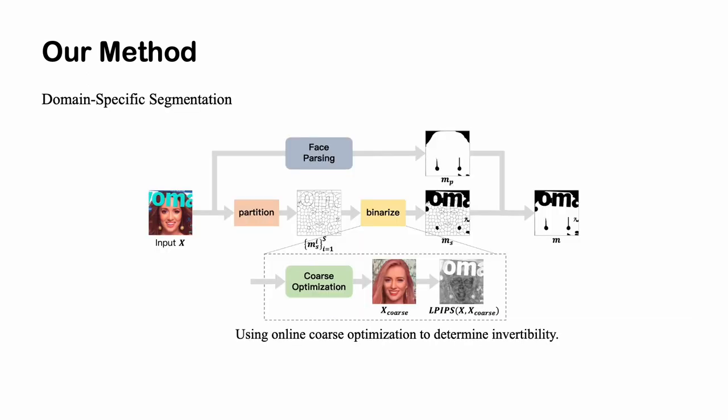To segment in-domain and out-of-domain areas, training an end-to-end learning-based domain segmentation model requires a large and annotated dataset, which can be costly. We design an automatic segmentation pipeline from the perspective of partition and binarizing. We first utilize a superpixel algorithm to partition the input image into multiple areas and employ optimization to distinguish in-domain and out-of-domain.